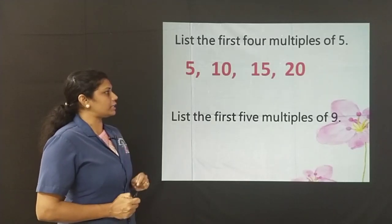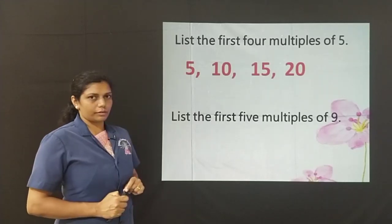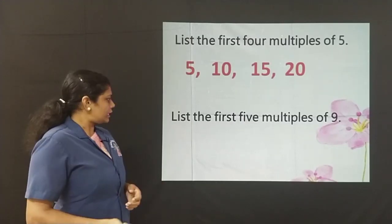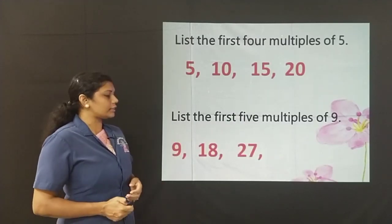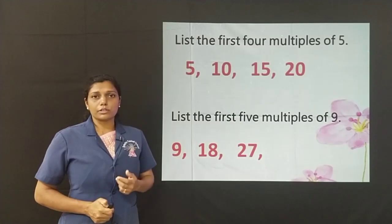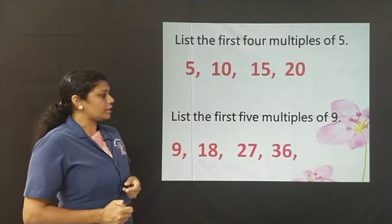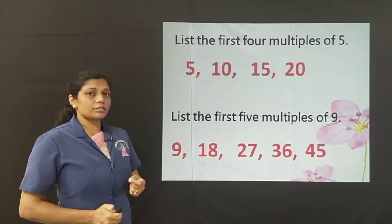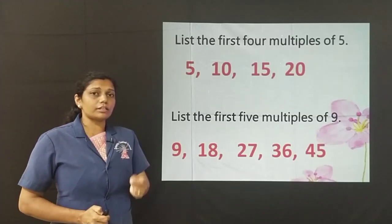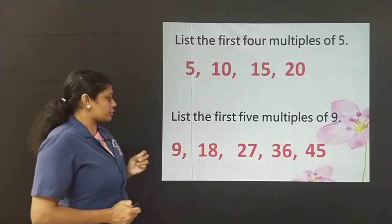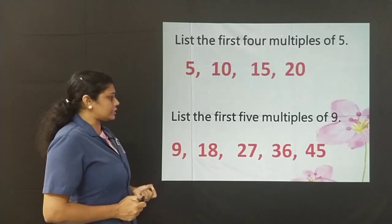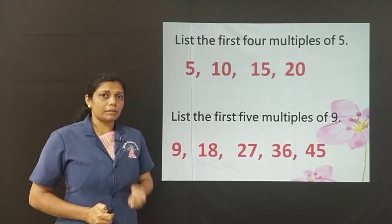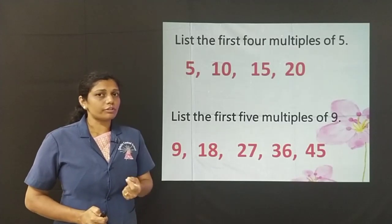List the first 5 multiples of 9: 9, 18, 27 — it is again like writing the tables of 9. 9 fours are 36 and 9 fives are 45. They have asked us to write the first 5 multiples. So, I write it as 9, 18, 27, 36 and 45. These are the multiples of 9. Clear?